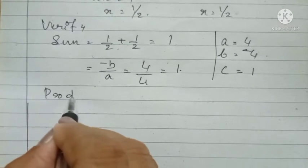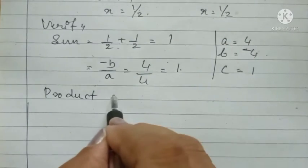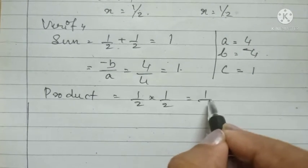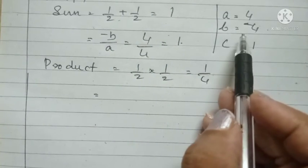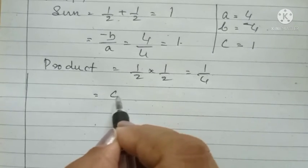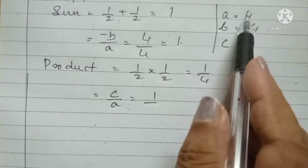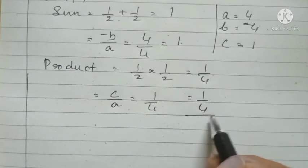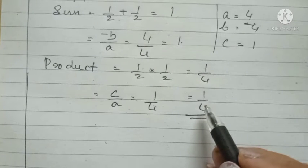For the product: 1/2 into 1/2 = 1/4. Verifying by formula: product = C by A = 1 by 4 = 1/4. In both cases the product is 1/4, therefore it is verified.